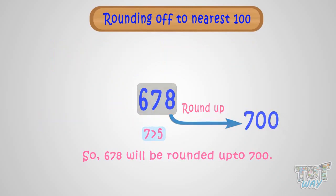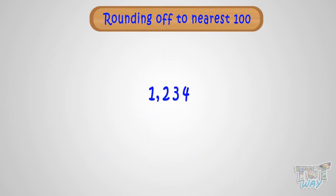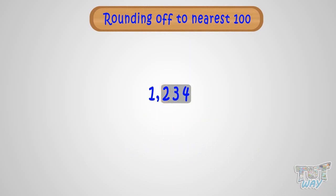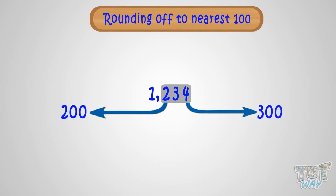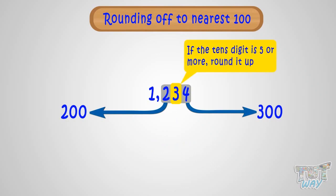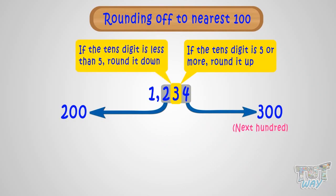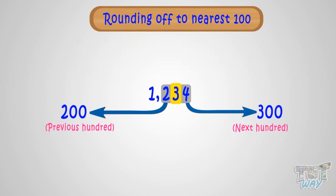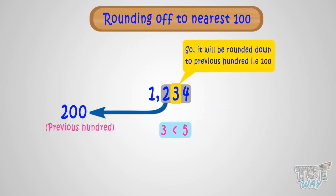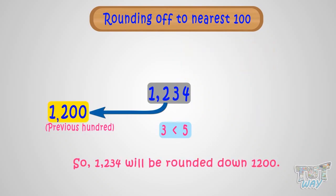Now let's round off 1,234 to the nearest hundred. Here the hundreds digit is two. We have to round the number to nearest hundred, so the nearest hundreds are 1,200 and 1,300. Again, it depends on the tens digit. Here the tens digit is less than five — that is three — so it will be rounded down to 1,200.